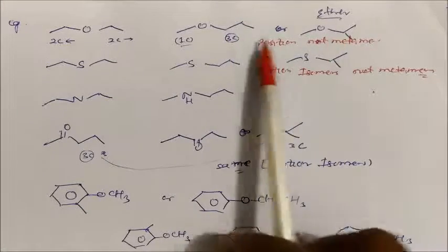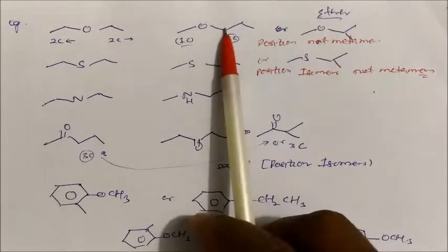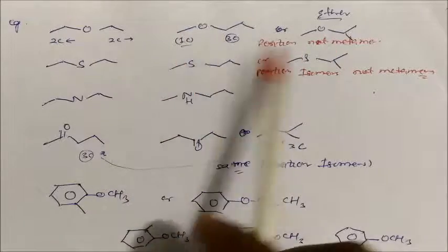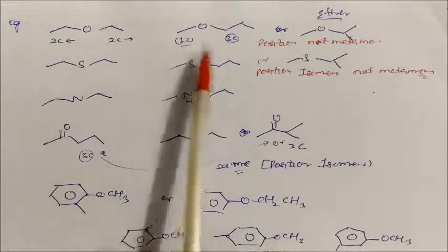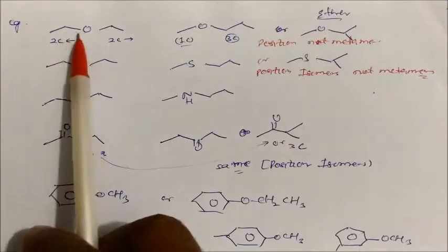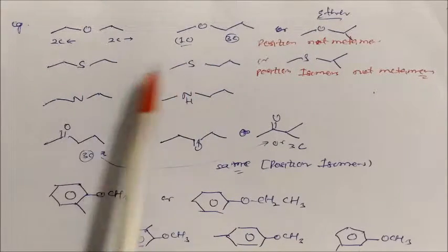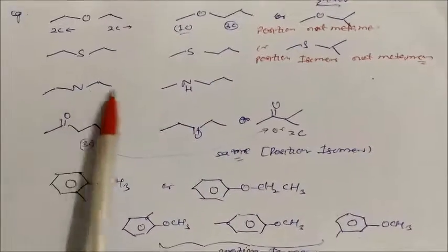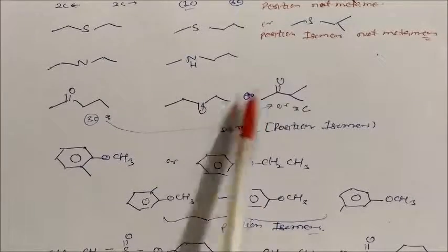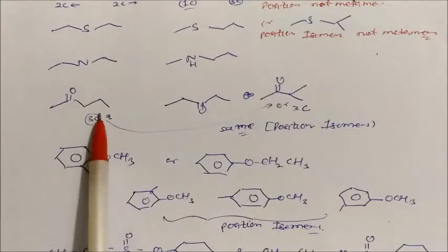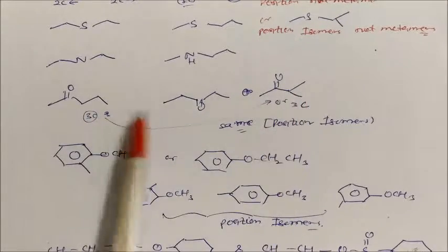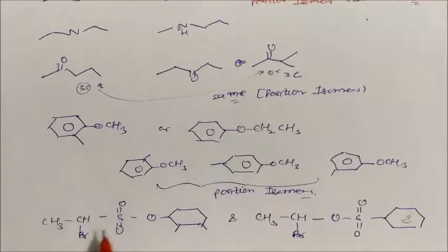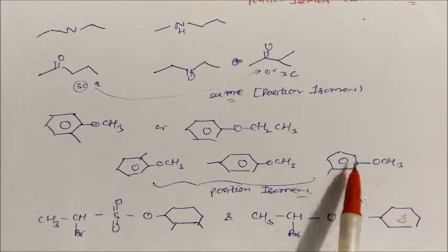When the carbon from one side creates branching instead of changing the carbon count on each side, those become position isomers, not metamers. Position isomers have the same number of carbons on each side of the polyvalent atom. This distinction applies similarly to thioethers, secondary amines, and ketones — metamers differ in carbon distribution around the functional group, while position isomers keep the same distribution but change branch positions.